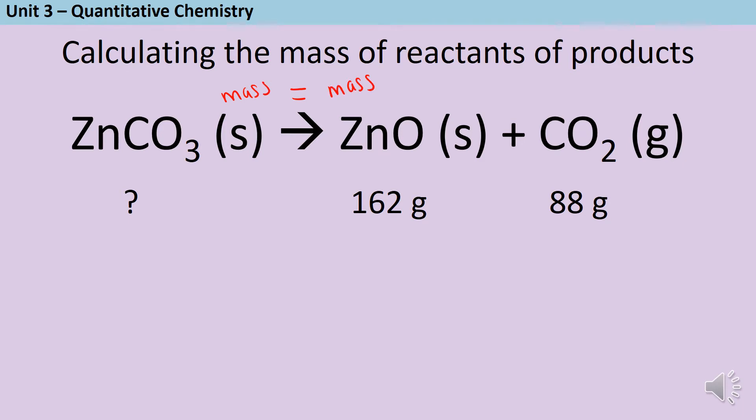So this is quite a straightforward question looking at the thermal decomposition of zinc carbonate, and in the question I'm told that at the end of the reaction there are 162 grams of zinc oxide and 88 grams of carbon dioxide. That together gives me a total mass of products of 250 grams. So using the law of conservation of mass, I know that the mass of the reactants must also be 250 grams. And in this example there's only one reactant, so that means I must have started with 250 grams of zinc carbonate.